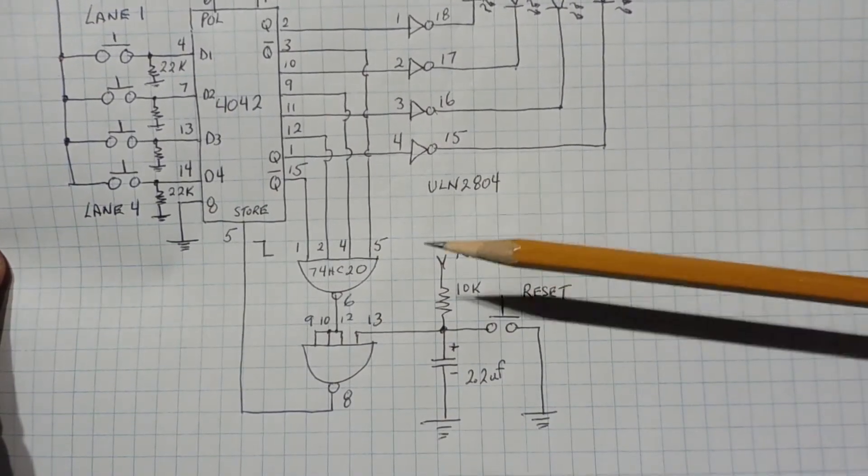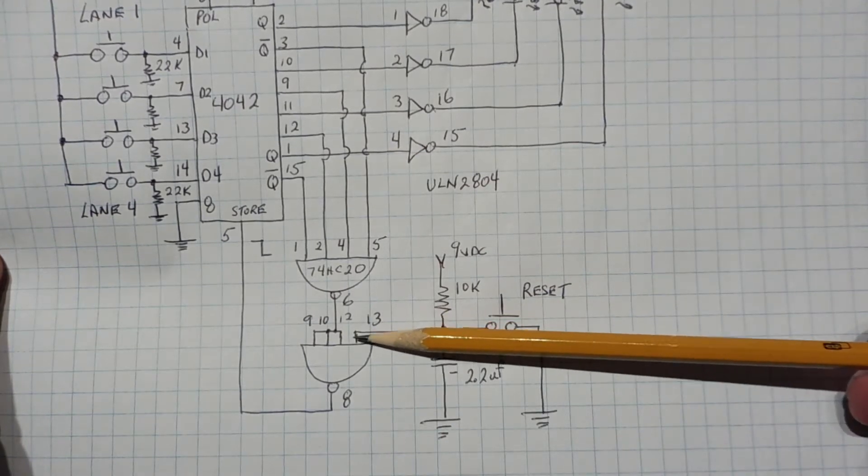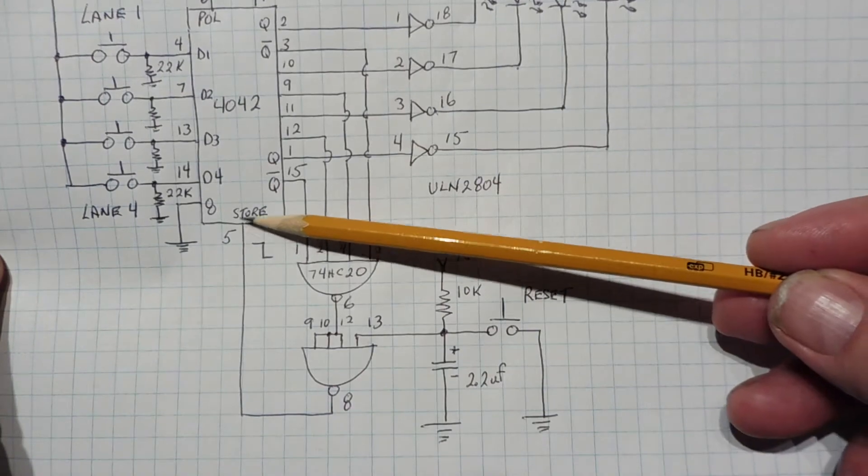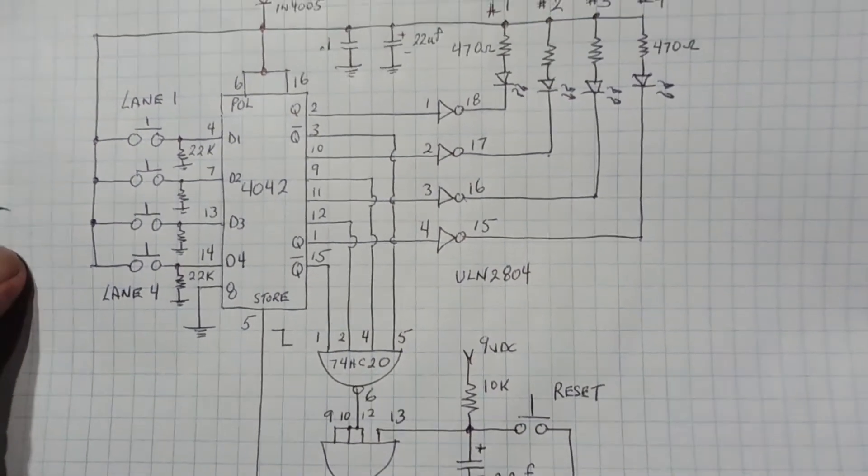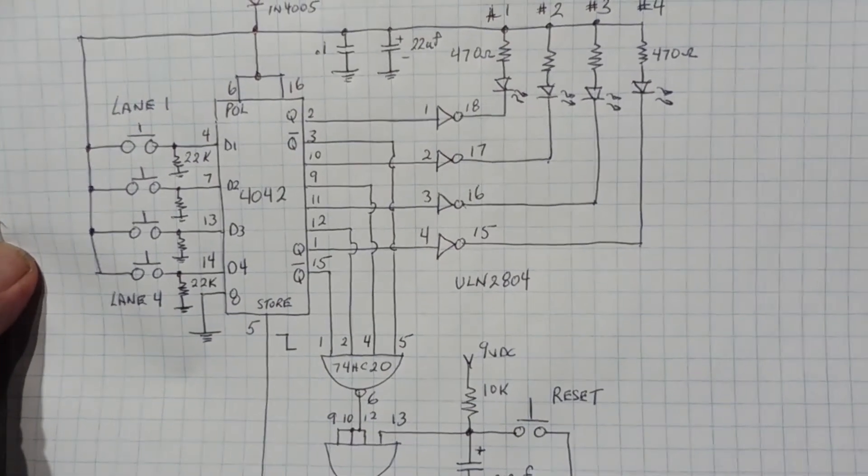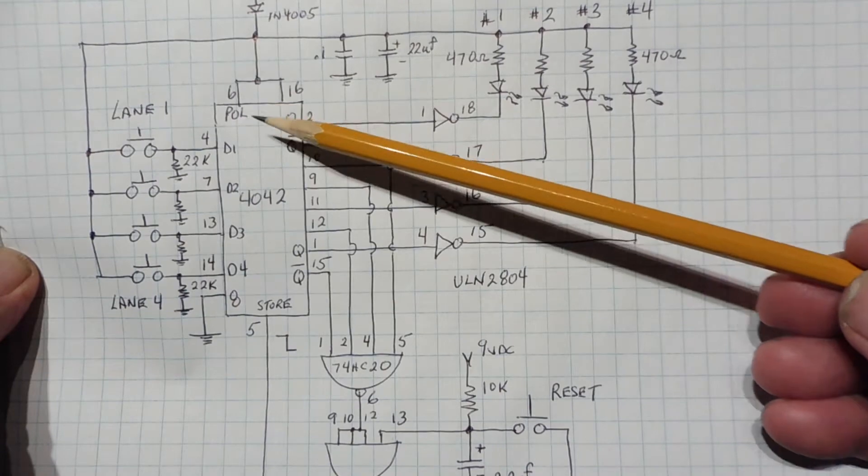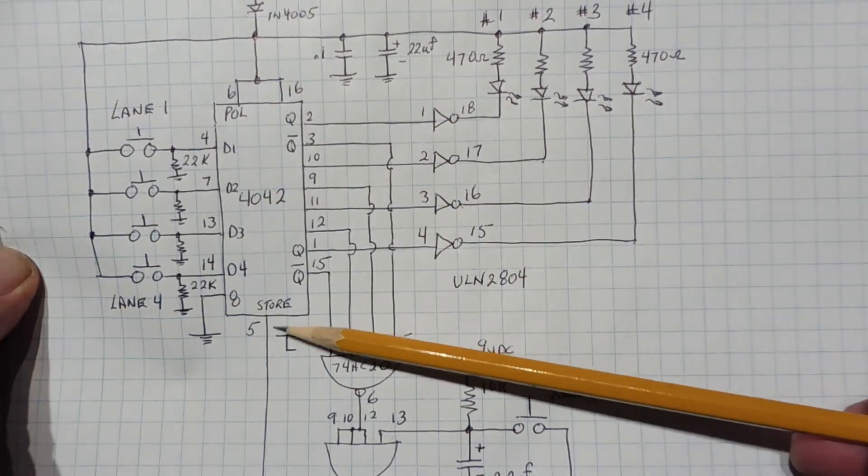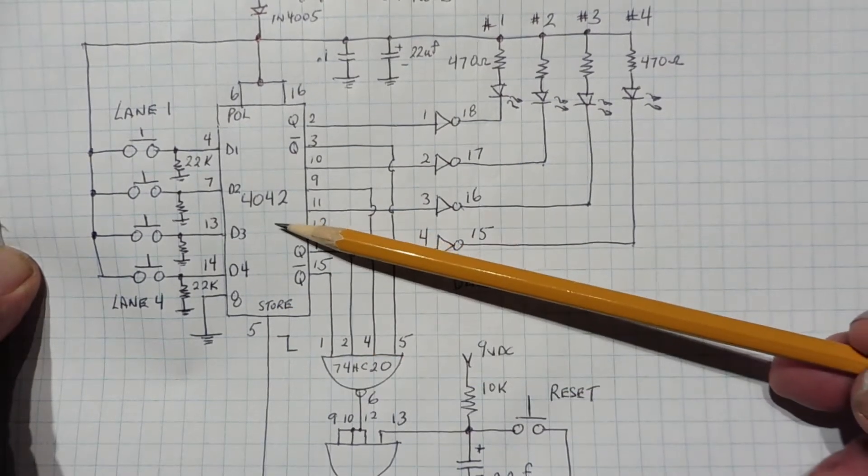Now when we first power up the circuit, this RC network here puts a negative going pulse on pin 13 of the NAND gate and we'll get a high output of pin 8. That's fed into pin 5, that's a store pin on the 4042 quad flip-flop. Now pin 6 of the 4042 is a polarity pin. That determines what kind of clock input is needed to clock the 4042. So when pin 6 is high, it's looking for a negative going edge on pin 5, that's the store pin, that will clock the 4042.